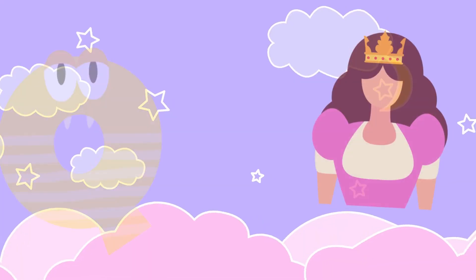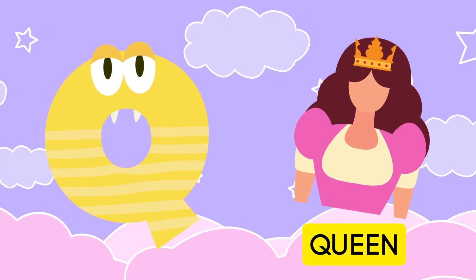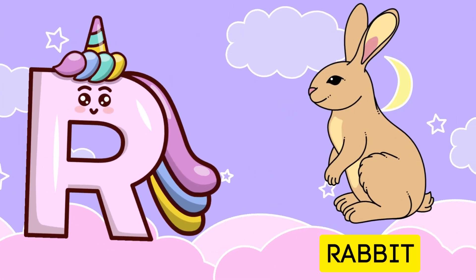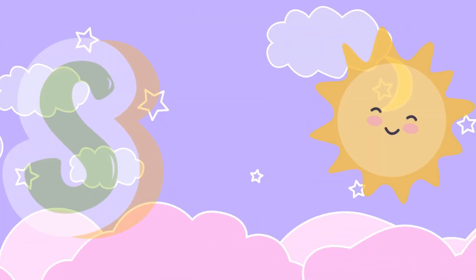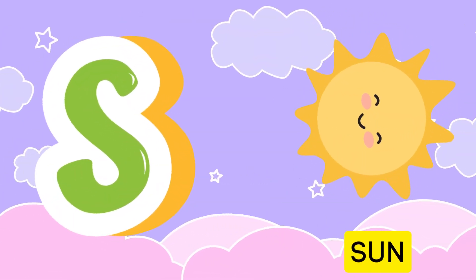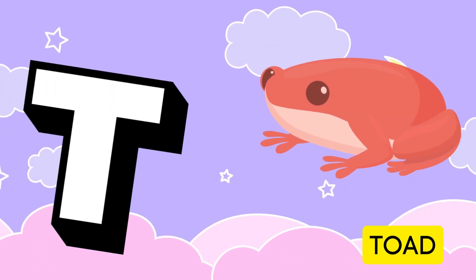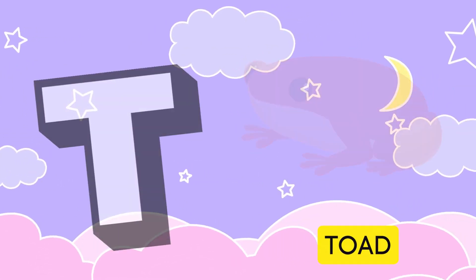Q is for queen, k-k-queen. R is for rabbit, r-r-rabbit. S is for sun, s-s-sun. T is for toad, t-t-toad.